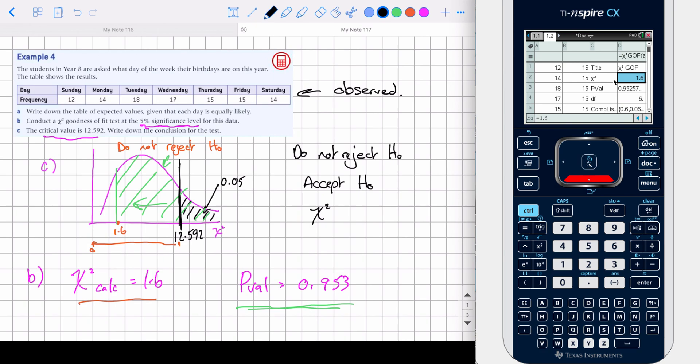Chi-squared calculated is less than chi-squared crit, which is perfectly acceptable, or 0 point, sorry, 1.6. 1.6 is less than 12.59, or we could say that the p-val of 0.953 is greater than p-val of 0.05. So you must give a judgment, but you must also give a reason.